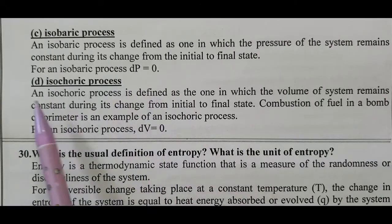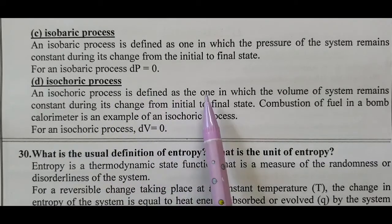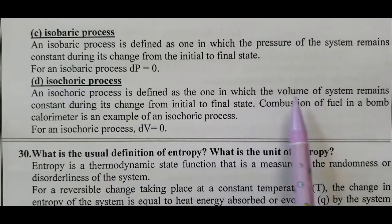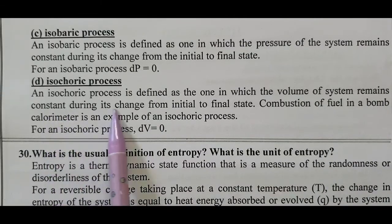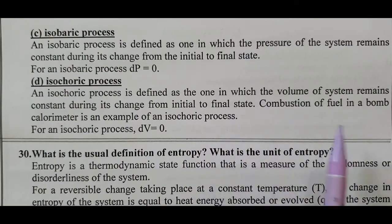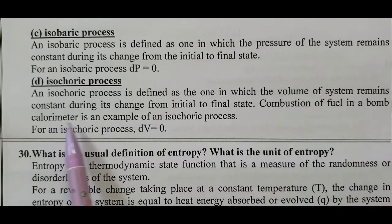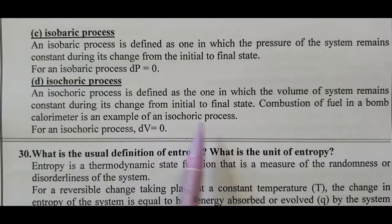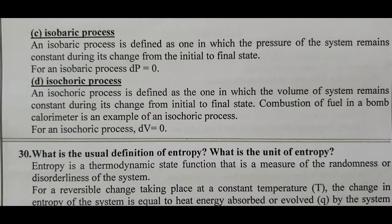Isochoric process: volume is constant. An isochoric process is defined as one in which the volume of the system remains constant during its change from initial to final state. Combustion of fuel in a bomb calorimeter is an example of an isochoric process. For an isochoric process, dV (change in volume) equals zero.